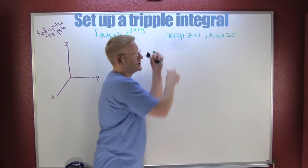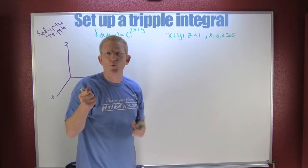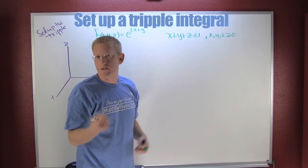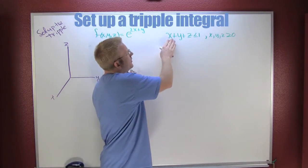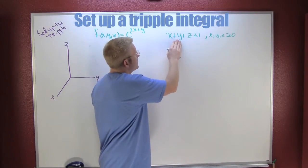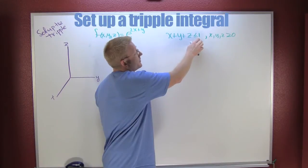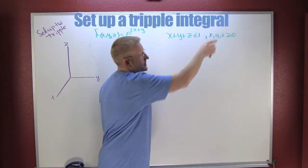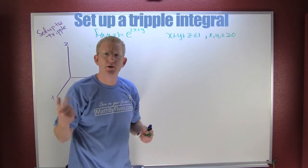Over this region. The first thing I want to do is I want to plot my region of integration. If I take a look at this here, the region of integration is going to be X plus Y plus Z is smaller than 1, where X, Y, and Z are bigger than 0, putting us in the first octant.